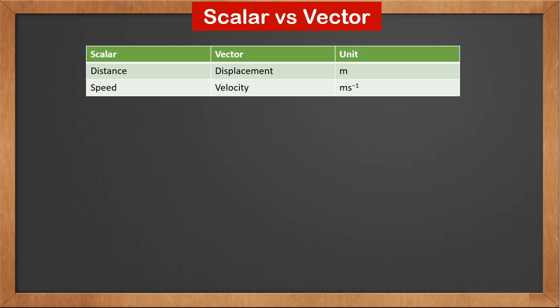Speed is a scalar and velocity is a vector. The unit for both of them is meter per second.